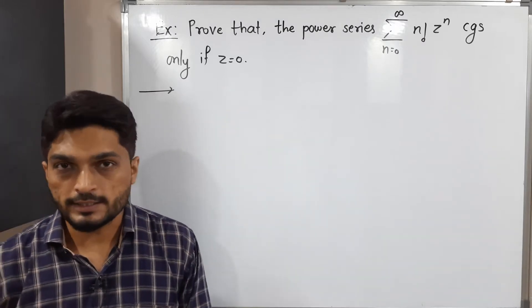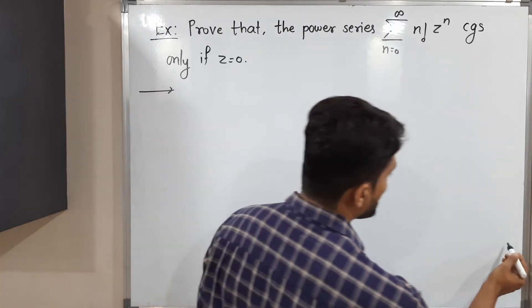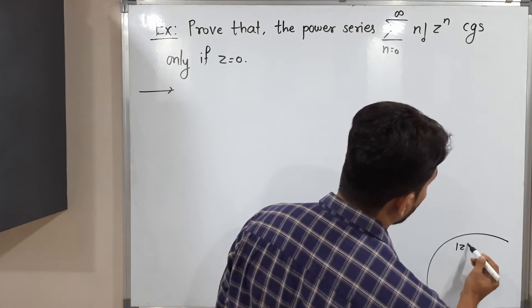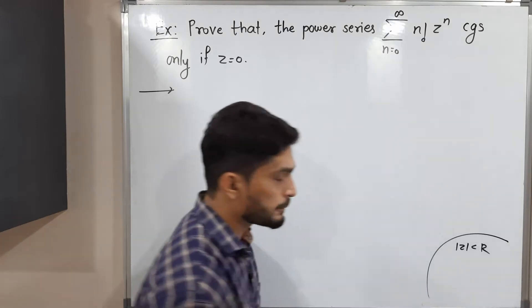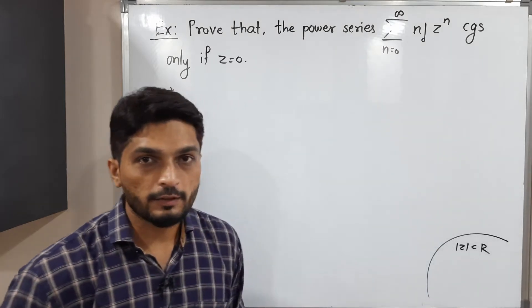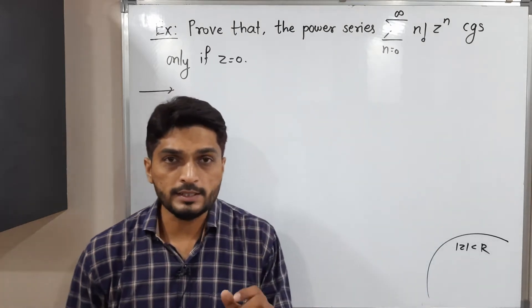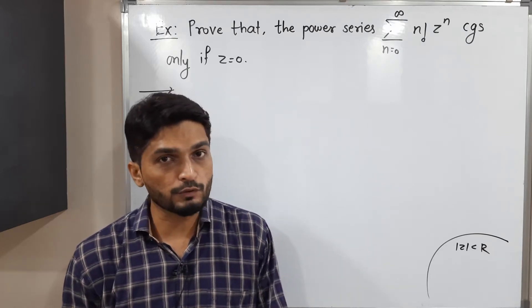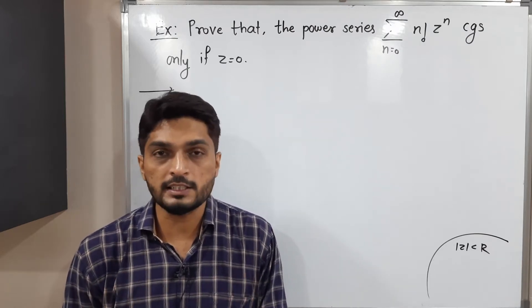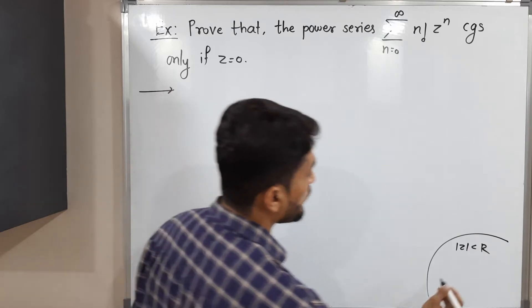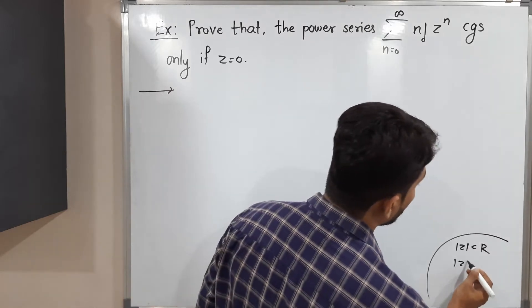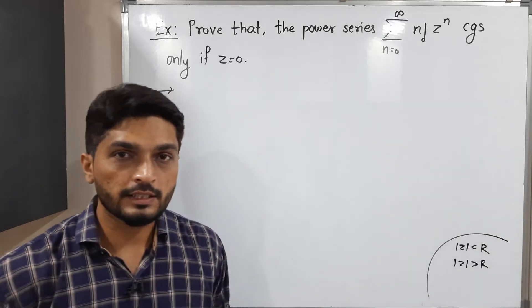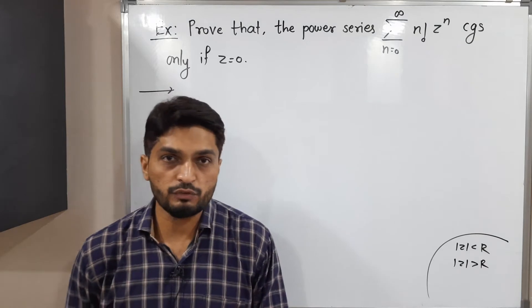Let us recall the concept. If mod Z is less than R — where R means the radius of convergence — then the given series is convergent. And if mod Z is greater than R, then the given series is divergent. So let us find the radius of convergence first.